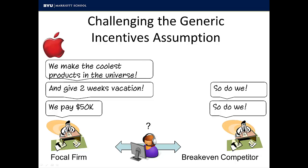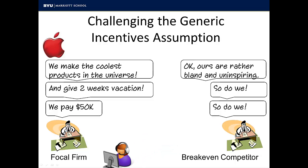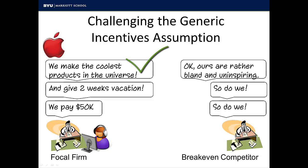Apple, for example, seems to be able to consistently attract and retain top talent while paying only average wages. Anecdotal reports suggest that this is because workers receive some non-pecuniary value from working for the company that makes some of the coolest products in the universe. All else being equal, it is clear why many workers would prefer to work for Apple. Ultimately, the opportunity to work for a company that makes the coolest products in the universe is an incentive that is highly firm-specific — workers can't get that incentive at any other firm.